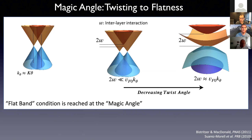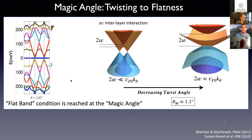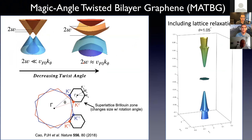This was discovered by Suarez Morrell and then Bistritzer and McDonald in electronic structure calculations. The magic angle is about one degree for twisted bilayer graphene. This electronic calculation from McDonald's group — which you've seen in the school — gives very flat electronic states. This flatness involves degrees of freedom from the two graphene sheets: two valleys, K and K prime. In the twisted bilayer graphene, you get two mini Brillouin zones around the original K and K prime where you end up with flat bands at the right angle.